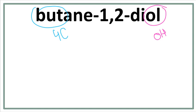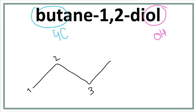A trick to draw this is that you always count till one less than the number of carbons you want to draw. So: one, two, three. First carbon, second carbon, third carbon, and the fourth carbon.